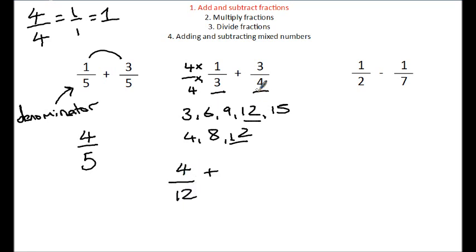To get the 4 to 12, we need to multiply by 3. So we're going to multiply the top and the bottom by 3, which gives us 9 over 12. And that gives us an answer of 13 over 12.